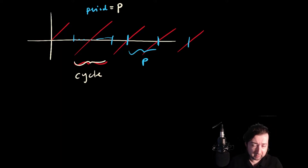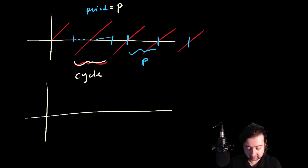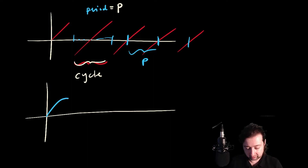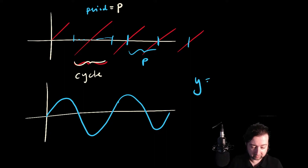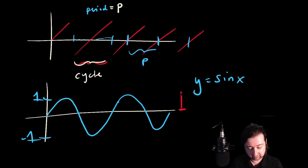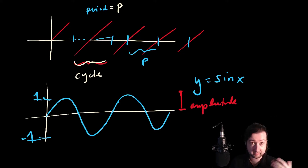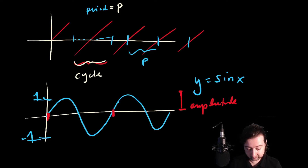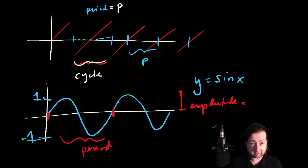More typical examples we work with are sinusoids, which just means sines and cosines, and those are functions that look like this. So maybe this is y equals the sine of x. The distance from the center of the sinusoid to the peak is called the amplitude. The length of one cycle of the function is the period. In the case of the sine, the amplitude of the basic sine function is one and the period is two pi.